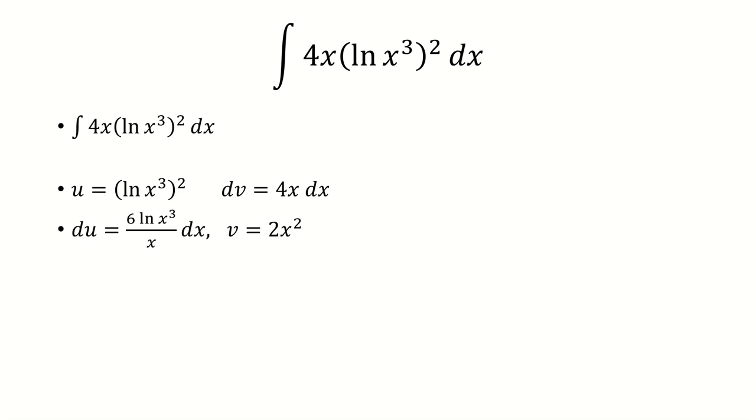The derivative of u is 6 times ln of x cubed over x. Because basically what you do is you bring down the power, you have 2 ln of x cubed, and then you take the derivative of ln of x cubed, which is 1 over x cubed times 3x squared, and that simplifies to 6 ln x cubed over x. The antiderivative of 4x is 2x squared.